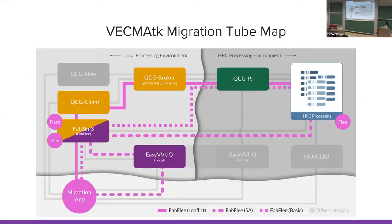The VECMA migration tube map shows how the migration application integrates with EZVVEQ and FabSim3 to run on supercomputer using the QCG pilot job scheduler. You can also use FabSim3 to directly integrate with the supercomputer, run ensembles and replicas through QCG pilot job, or perform validation and verification patterns using QCG client or QCG broker — all schedulers available within the Poznan supercomputer.